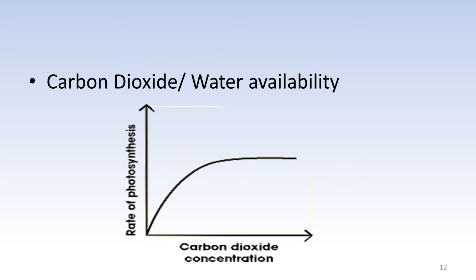This graph is similar to the one that we saw before with light intensity. The same explanation applies here. If you were to increase the carbon dioxide concentration, or it could be the amount of water that is available to the plants, the rate of photosynthesis will increase until the plant reaches its maximum rate.